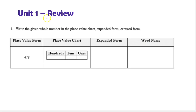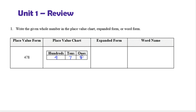Unit 1 review, question 1. Write the given whole number in the place value chart, expanded form, or word form. Here's the given whole number in place value form — the regular way we write a number. Here's the place value chart. Notice the 4 is in the hundreds place, there's a 7 in the tens place, and the digit 8 is in the ones place.